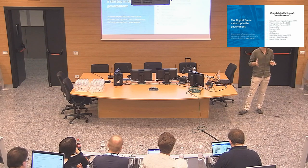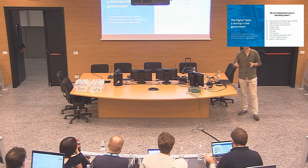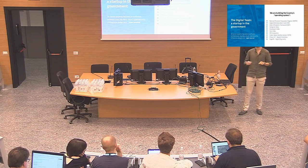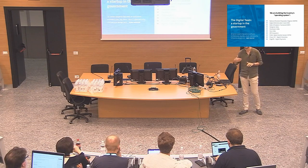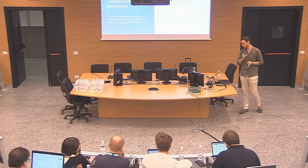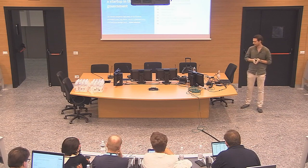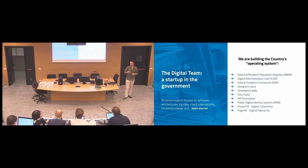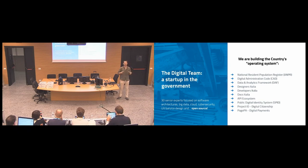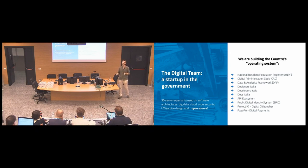We say that we are building the operating system of the country. Governments in general are complex machines. But in order to digitally transform a country, we need solid foundations — the digital infrastructure in place before thinking about how to build layers on top. This is exactly what we are focusing on. We call them the enabling platforms: the National Resident Register, digital identity, digital payments. When we started to think about how to implement these ideas, we said we don't just need technology — we need to involve citizens as much as possible. That's exactly why we built communities around them.